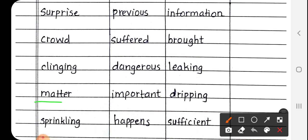Next is matter, M-A-T-T-E-R. Matter matlab mamla. Next is sprinkling, S-P-R-I-N-K-L-I-N-G. Sprinkling matlab chhidkao karna. Hum paani se sprinkle karta hai, matlab kya hua? Paani ka chhidkao karna. Uska kya matlab hota hai? Sprinkling.